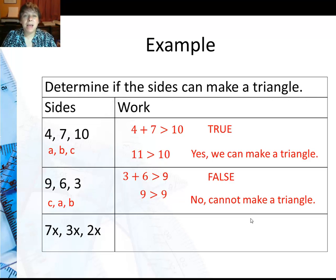Then I have 7x, 3x, 2x. Again, I have the longest side listed first. So I'm going to say 2x plus 3x is greater than 7x.